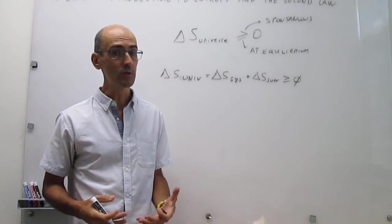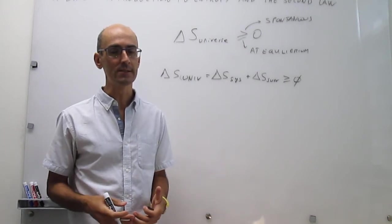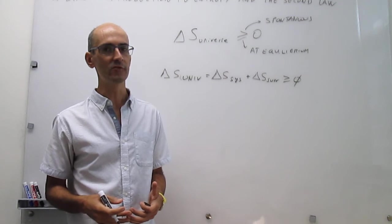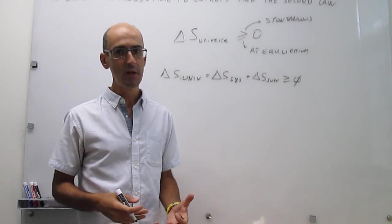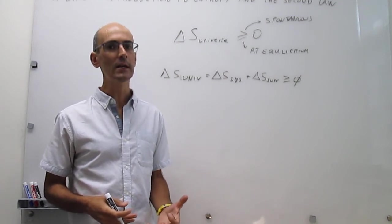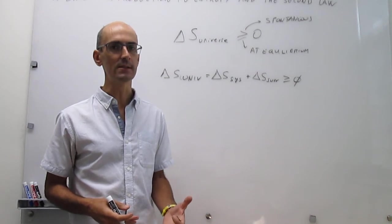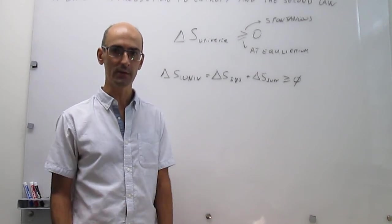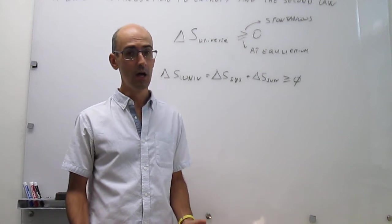Now, if you do a calculation in which, of a particular process, and you find that the changing entropy in the universe is negative, then you can conclude right away that the process will not take place. It's not spontaneous. So that's kind of the power of the second law.